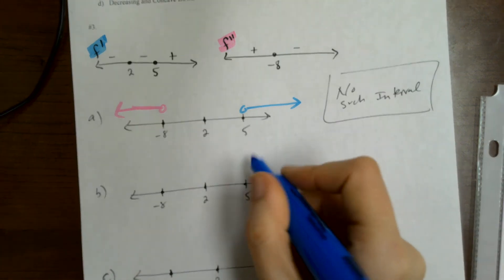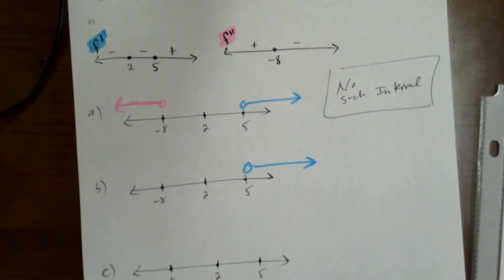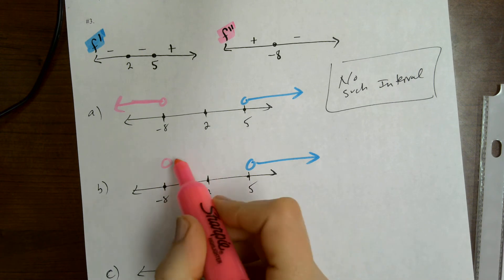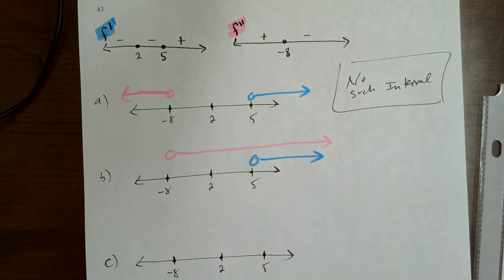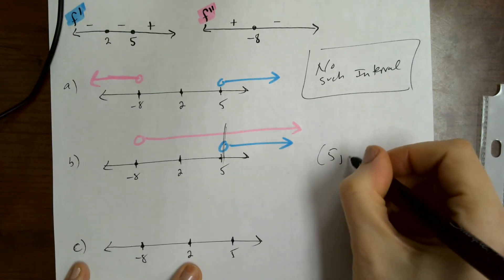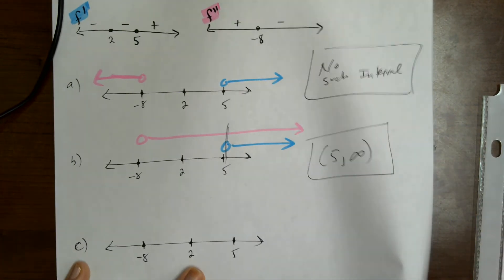Part B — increasing and concave down. So increasing is F prime positive. Concave down is F double prime negative. So here is our overlap: from five to infinity.